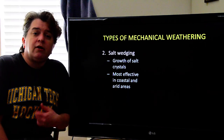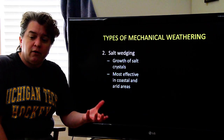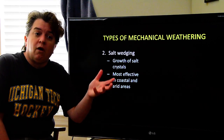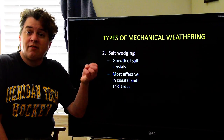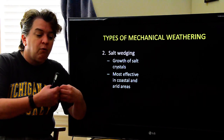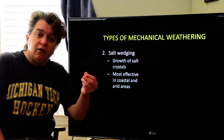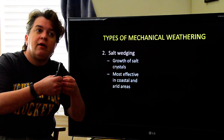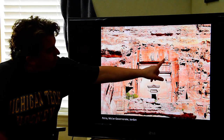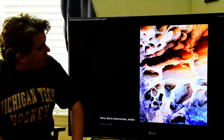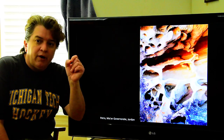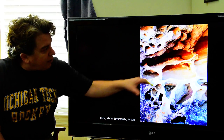Salt wedging is most effective in coastal areas where you get salt spray from the ocean landing on rocks and evaporating. It's also common in arid areas. In both places, water evaporates and whatever dissolved salts were in that water get left behind. As the salt precipitates, it starts breaking apart the rocks. This is Petra in Jordan — notice up here the rocks look like they should be flat, but they've got holes in them. Much of that is caused by salt wedging. As those salt crystals grow, they break little sand grains out of the rock, eventually creating these types of structures.